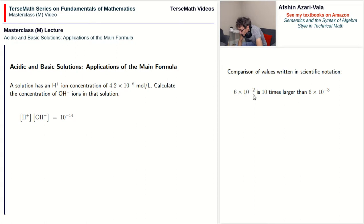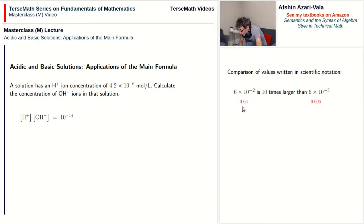Negative 2 is 1 unit larger than negative 3, meaning we divide by one fewer 10. You can convert them to decimals to verify: 6 times 10 to the power of negative 2 becomes 0.06, and 6 times 10 to the power of negative 3 becomes 0.006. You can see that not only is 0.06 larger than 0.006, it's actually 10 times larger.